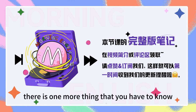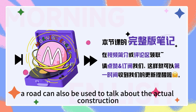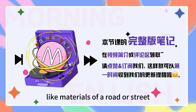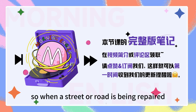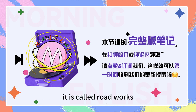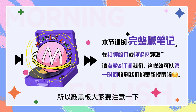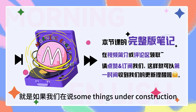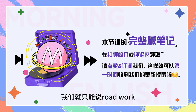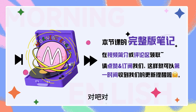There is one more thing that you have to know. A road can also be used to talk about the actual construction, like materials, of a road or street. So when a street or road is being repaired, it is called roadworks, not streetworks. 所以这是一个固定的表达，大家要注意一下，就是如果在说 something is under construction,我们就只能说roadworks,而不能够说streetworks. Correct. Exactly.